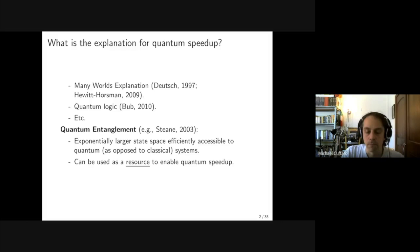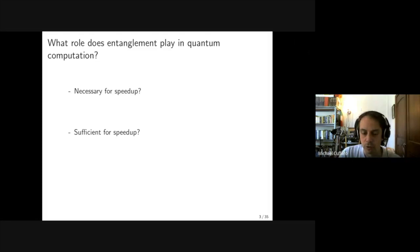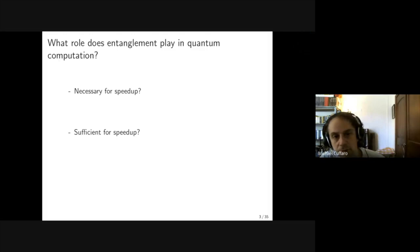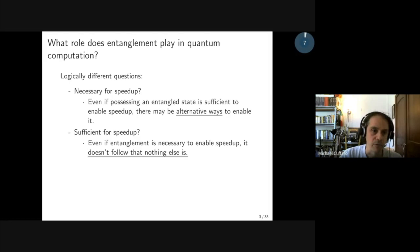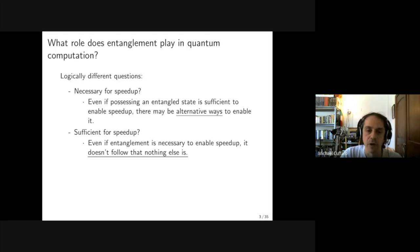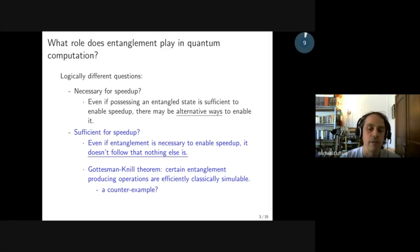In this talk, we're going to be investigating the question: in what sense should we think of entanglement as being used as a resource to enable quantum speedup? Given that we don't want to deny that entanglement plays a role in computation, we can ask: is it necessary for speedup? Is it sufficient for speedup? Is it both? These are logically different questions, because even if possessing an entangled state is sufficient to enable speedup, it might be that there are alternative ways to enable it. Today I'm going to be focusing on the second question — sufficiency. Now, the Gottesman-Knill theorem seems to give a counterexample to that idea.